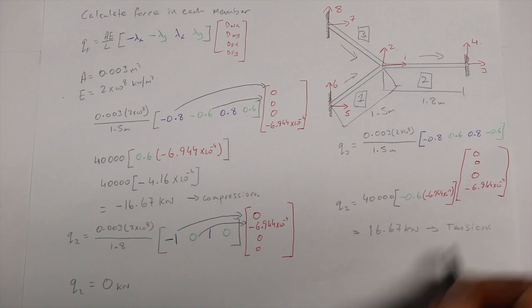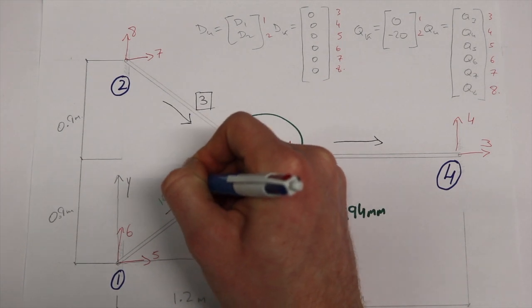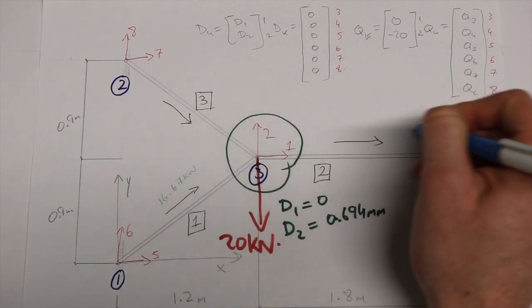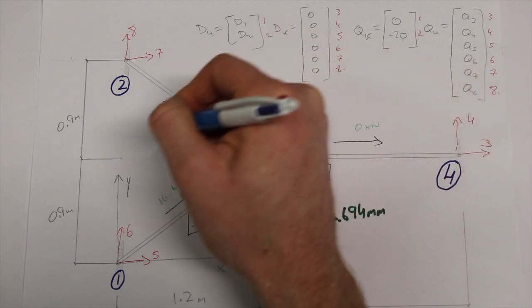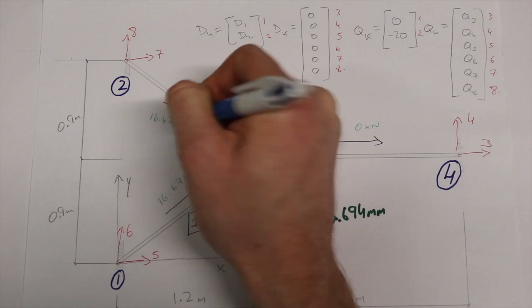Now that we have the force in each member and all displacements obtained, the question is now complete. In order to obtain the unknown remaining forces in this truss, simple matrix manipulation can take place similar to the manipulation we used to find the unknown displacements earlier in the video.